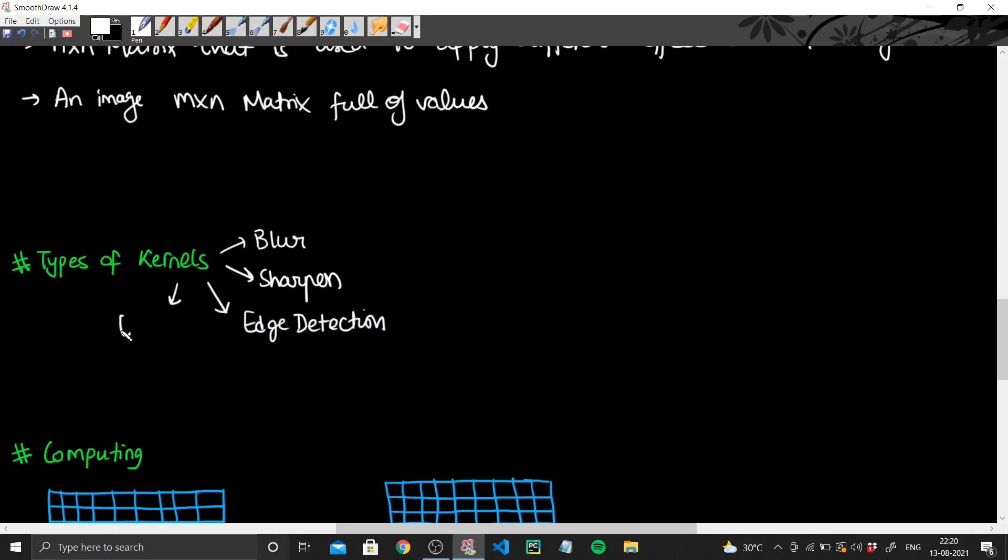We also have something known as emboss. There is of course the identity kernel, which is nothing but the image itself. And then we have something called as bottom Sobel, and if you have something as bottom it is logical that we have something as top Sobel as well. And if you have bottom and top, there exists left and right Sobel.